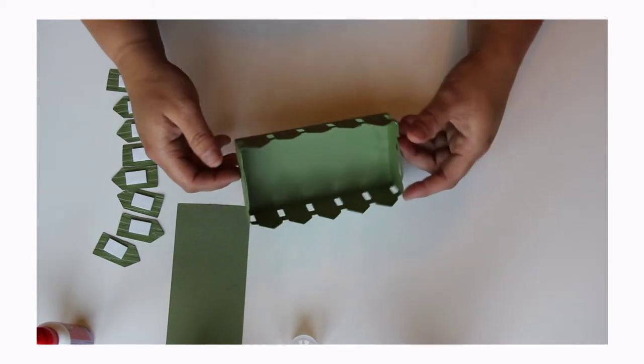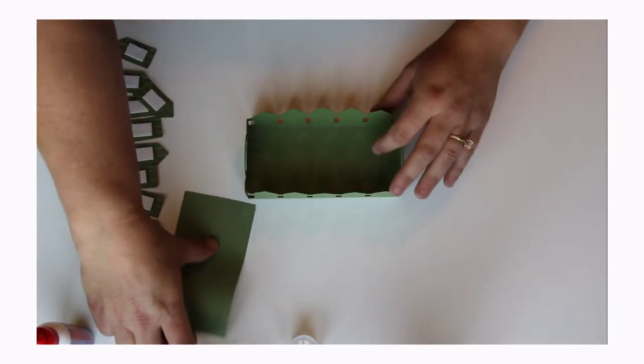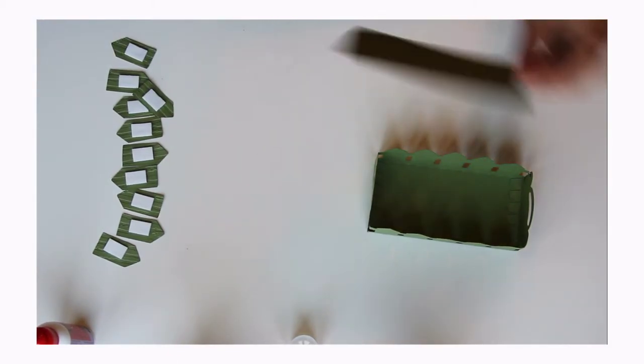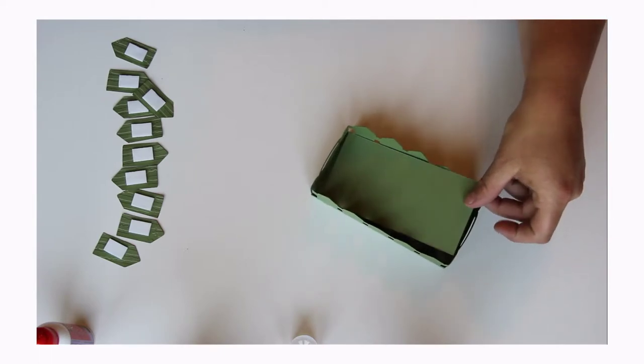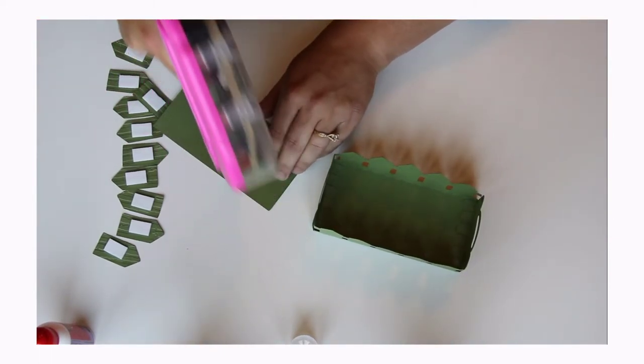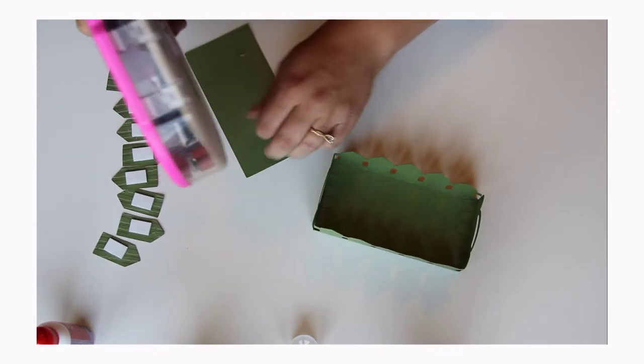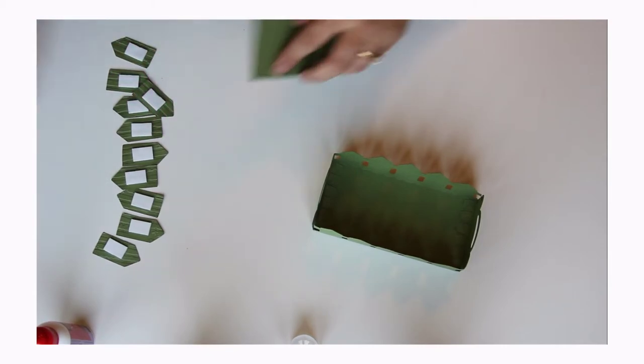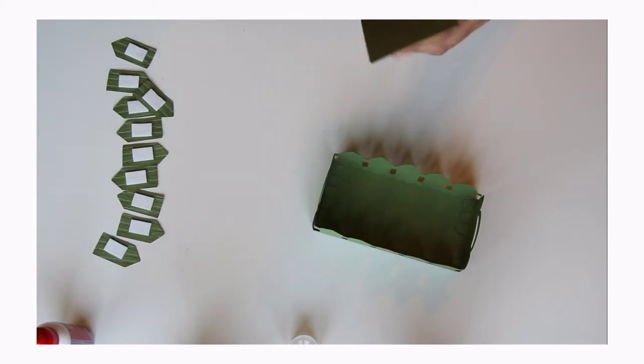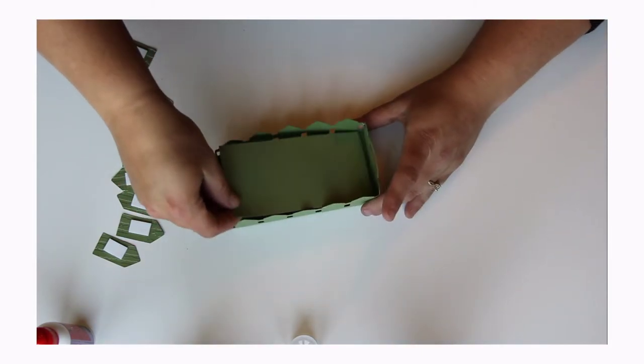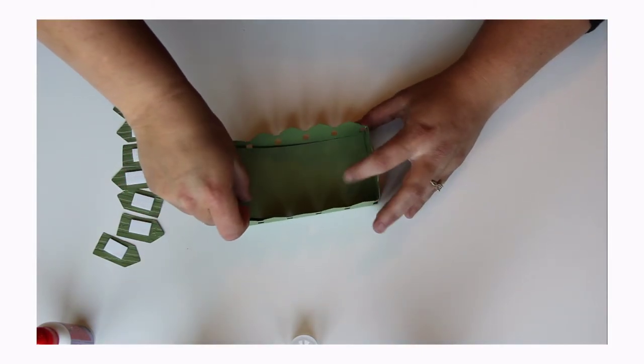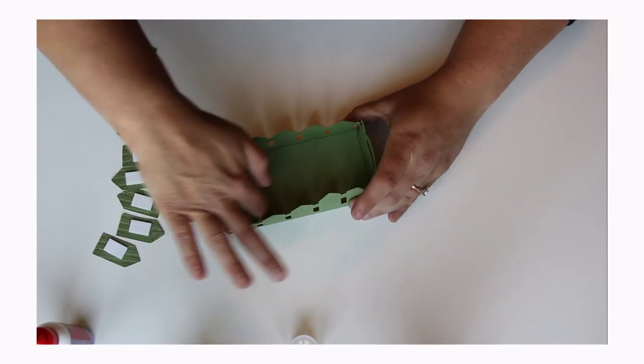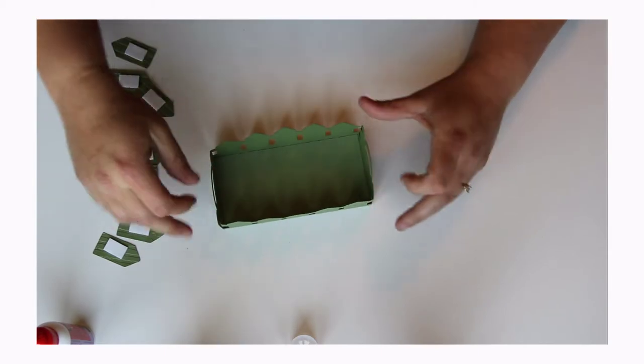That forms the box for you. Now we're going to put down the inside bottom here. I'm going to use my ATG gun for this. We're going to get all these sides glued down there and just fit this right in to the box to the bottom. It looks nice and polished.